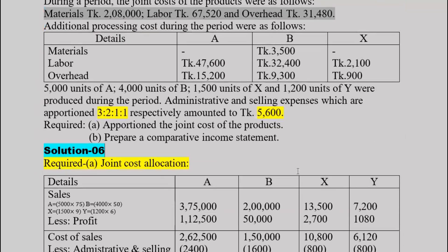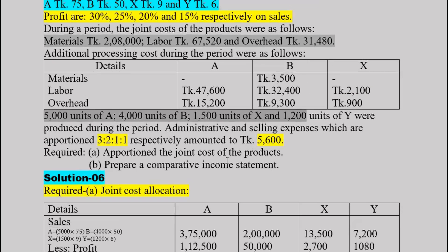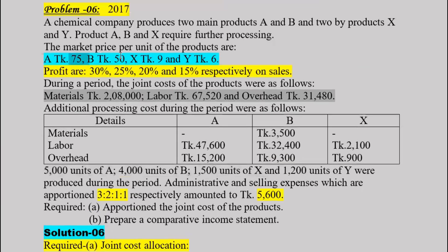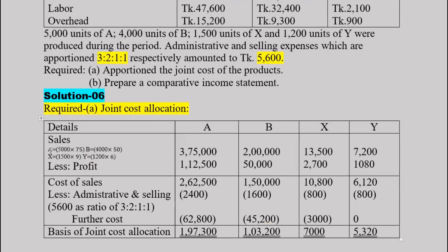The allocation involves both production and sales columns. We look at the sales value, and for products like Y which have no further cost, the approach differs. The process involves examining sales figures and the further processing costs for each product.